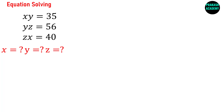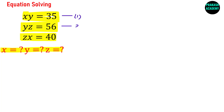This is an equation solving problem and it is relatively easy. We have been given three equations: the first equation is XY = 35, the second is YZ = 56, and the third one is ZX = 40. We have to solve for X, Y, and Z. Let us call these equation 1, equation 2, and equation 3.